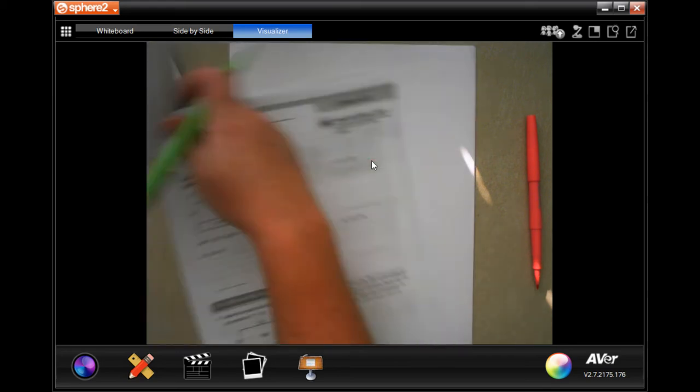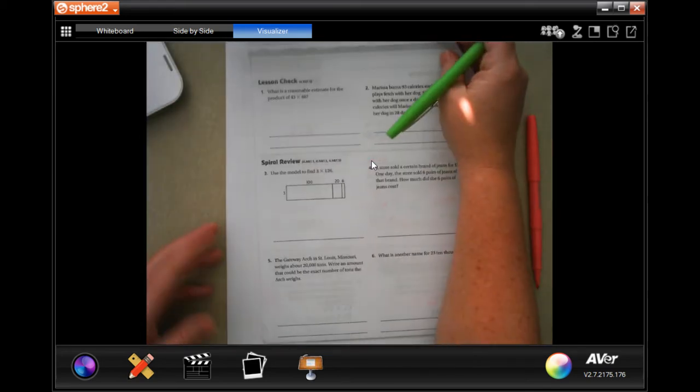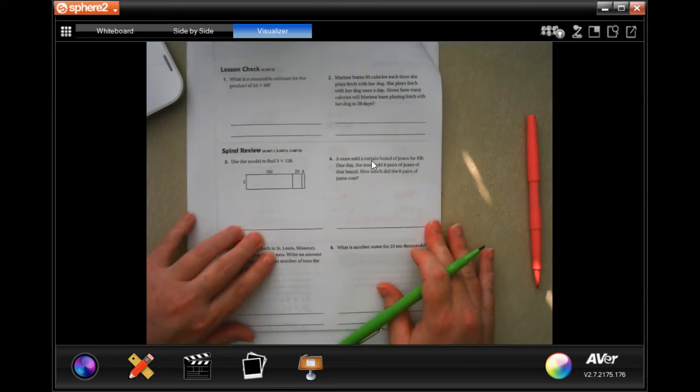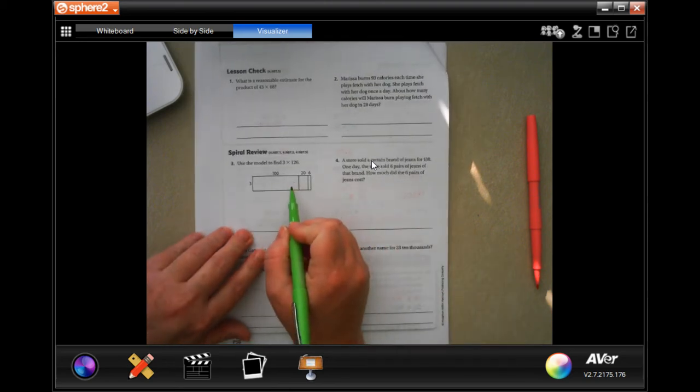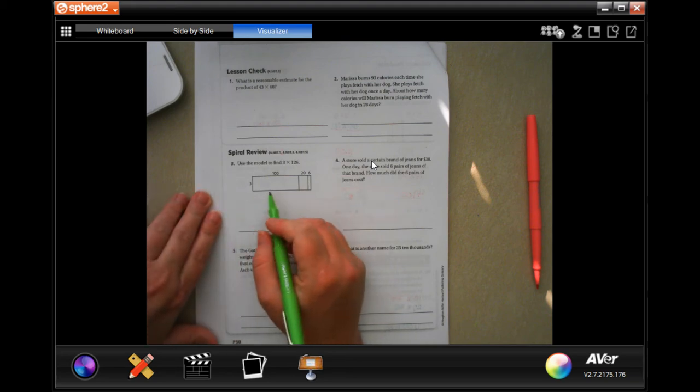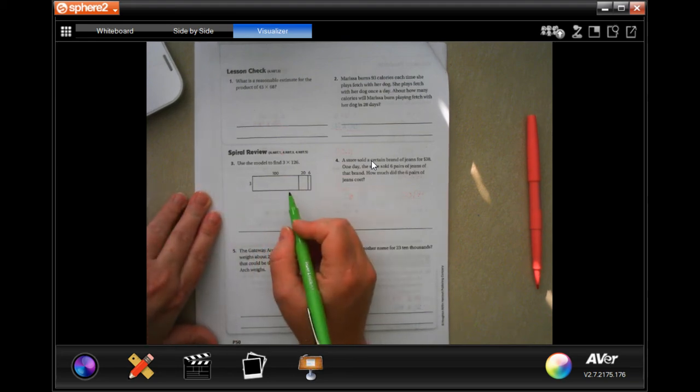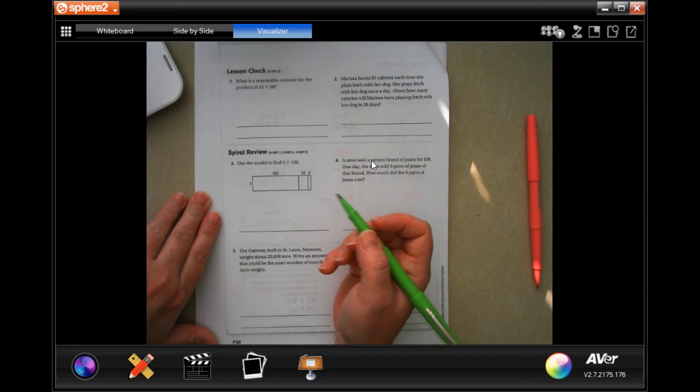We're going to go on to the back. The lesson check, you guys are going to do those. You totally can. We're going to use the model just like we were doing in the last lesson to write in how much everything is worth. Then we just add it up. Super easy, guys.